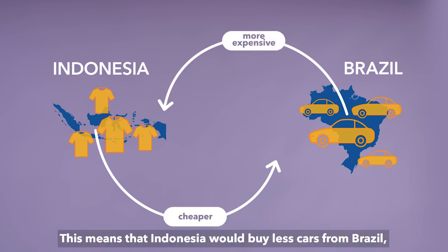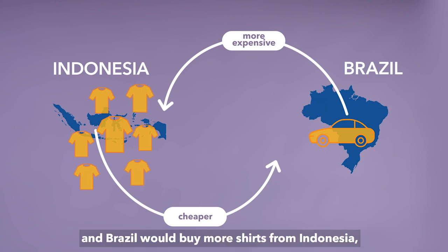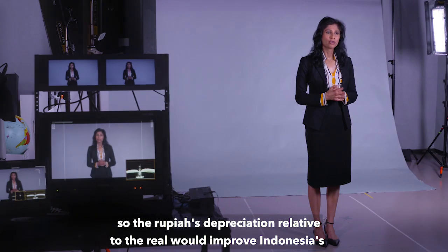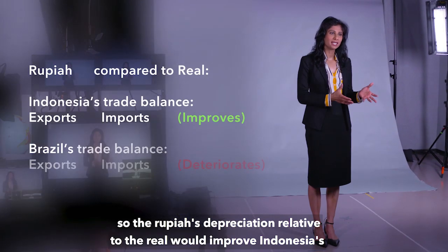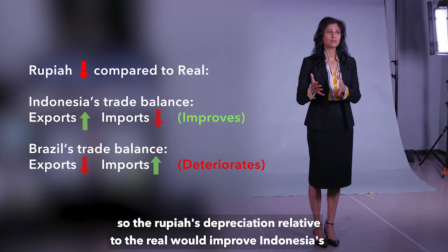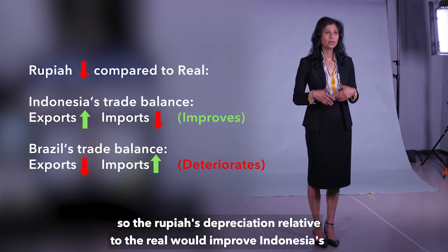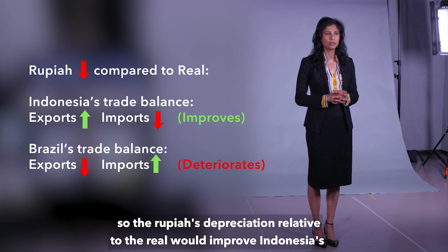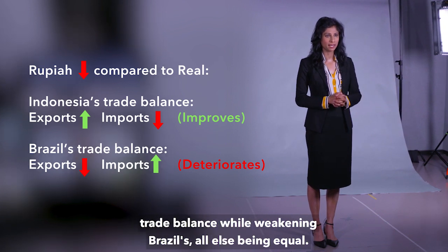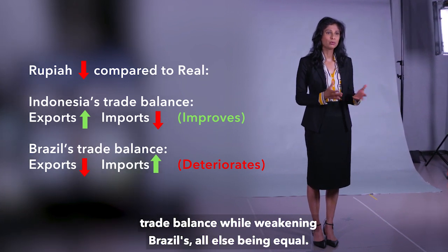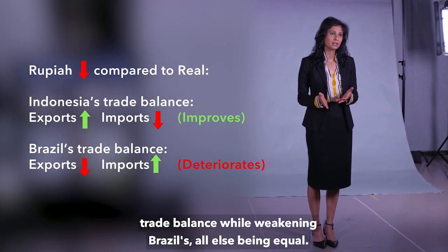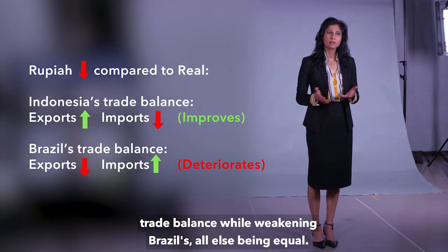This means that Indonesia would buy fewer cars from Brazil and Brazil would buy more shirts from Indonesia. So the rupiah's depreciation relative to the real would improve Indonesia's trade balance while weakening Brazil's, all else being equal.